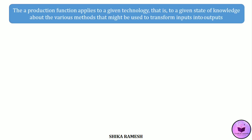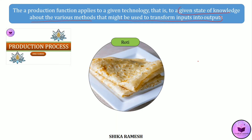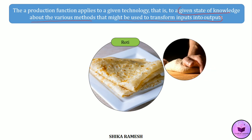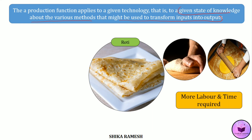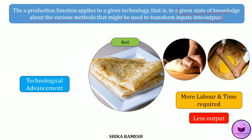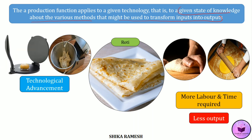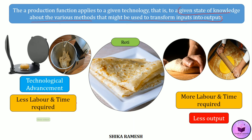Any production function applies to a given technology — that is, a given state of knowledge about the various methods that might be used to transform inputs into outputs. For example, in making rotis in a restaurant, when labourers had to manually knead the dough and roll each roti, it took a lot of time and the number of rotis produced in a given period was very low. But with the advancement in technology, kneading and pressing of rotis are done by capital equipment, making the job more effortless, taking less time, and allowing more rotis to be produced with fewer labourers. So in both cases labour and capital were used, but advancement in capital goods made the work technically and economically efficient, producing more output in a given period of time.